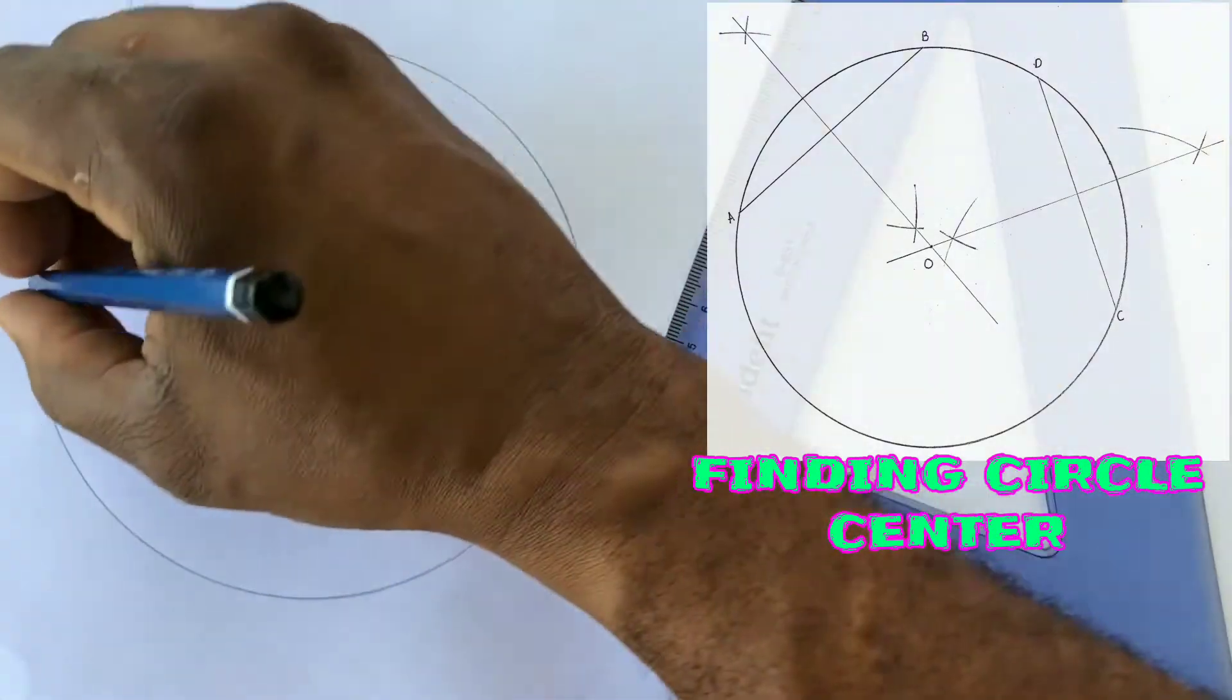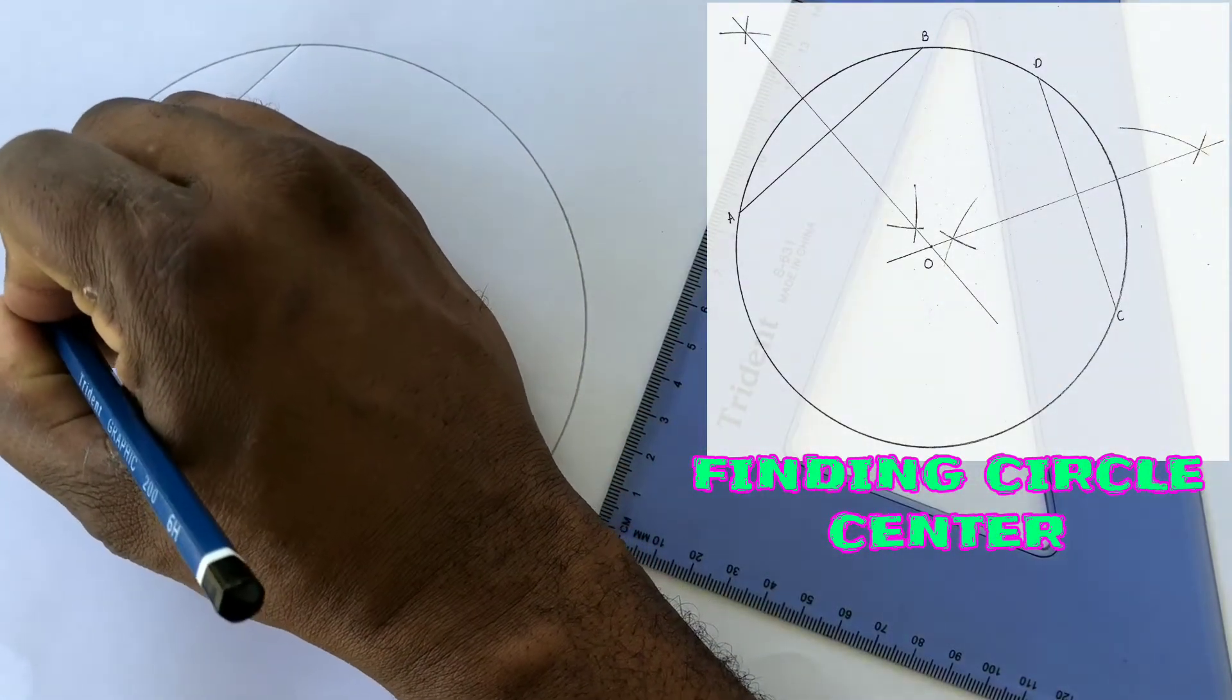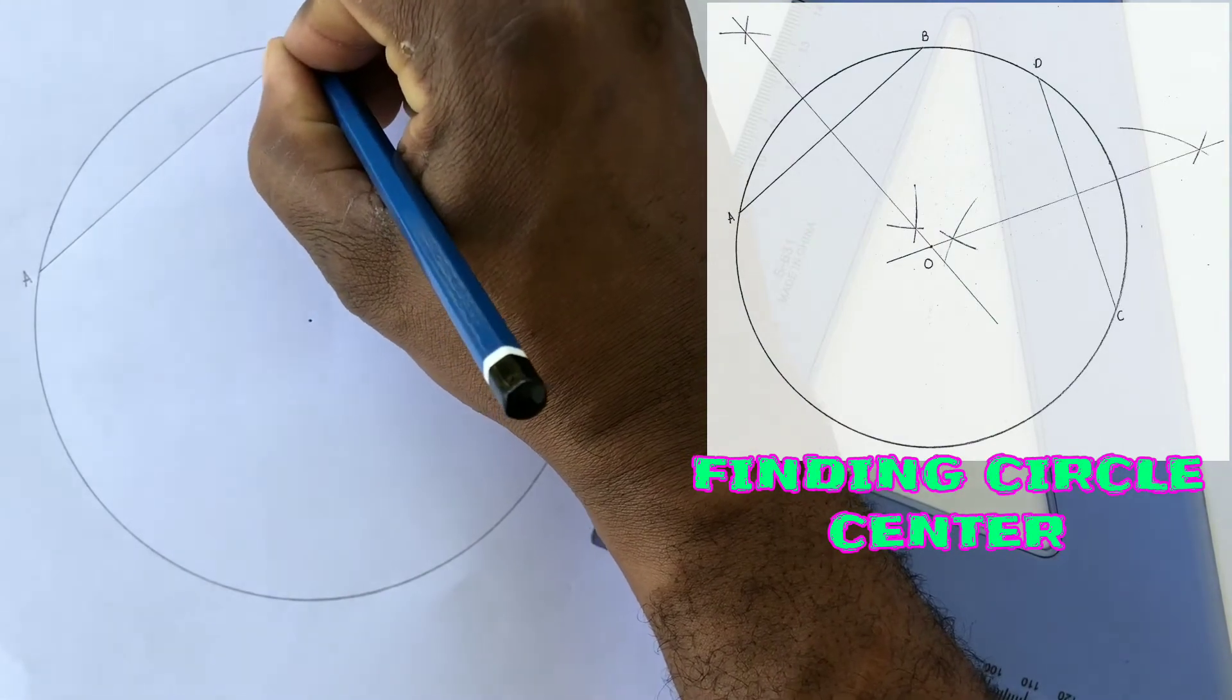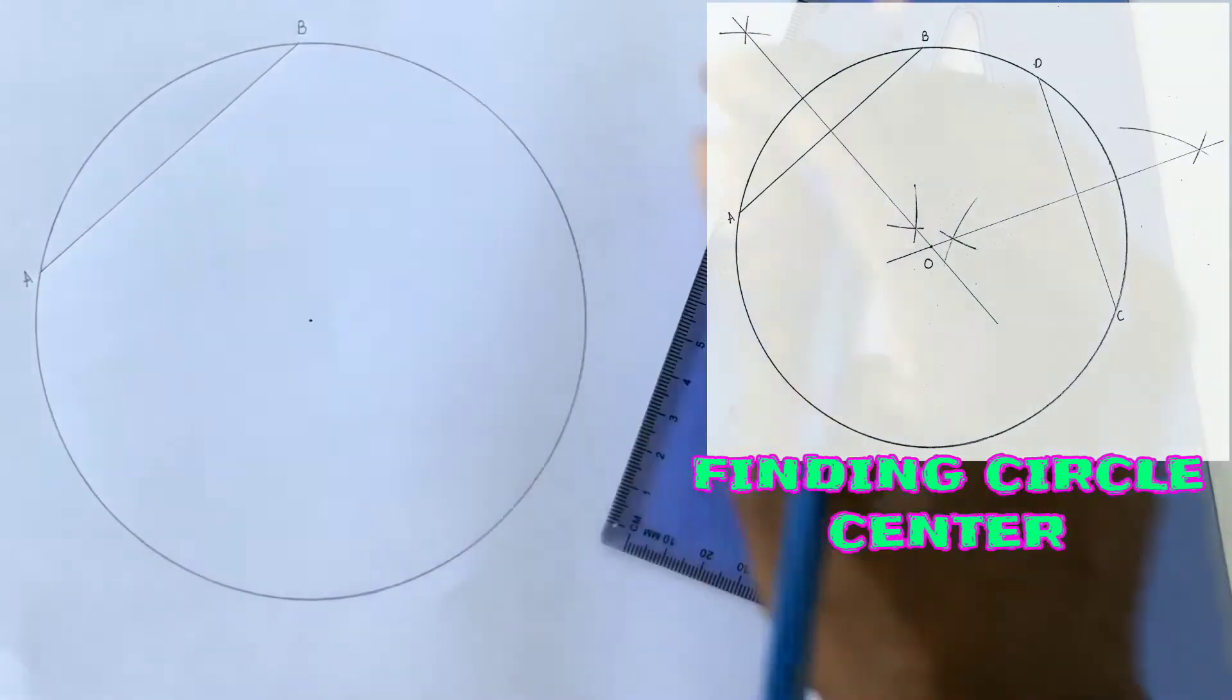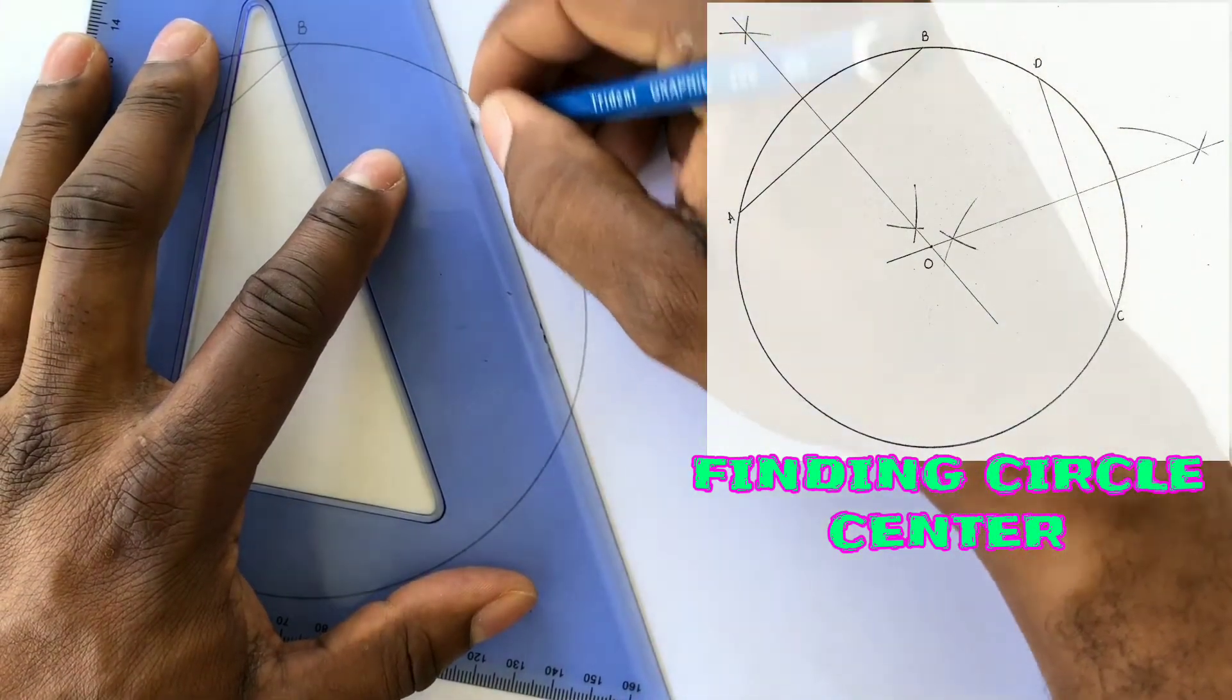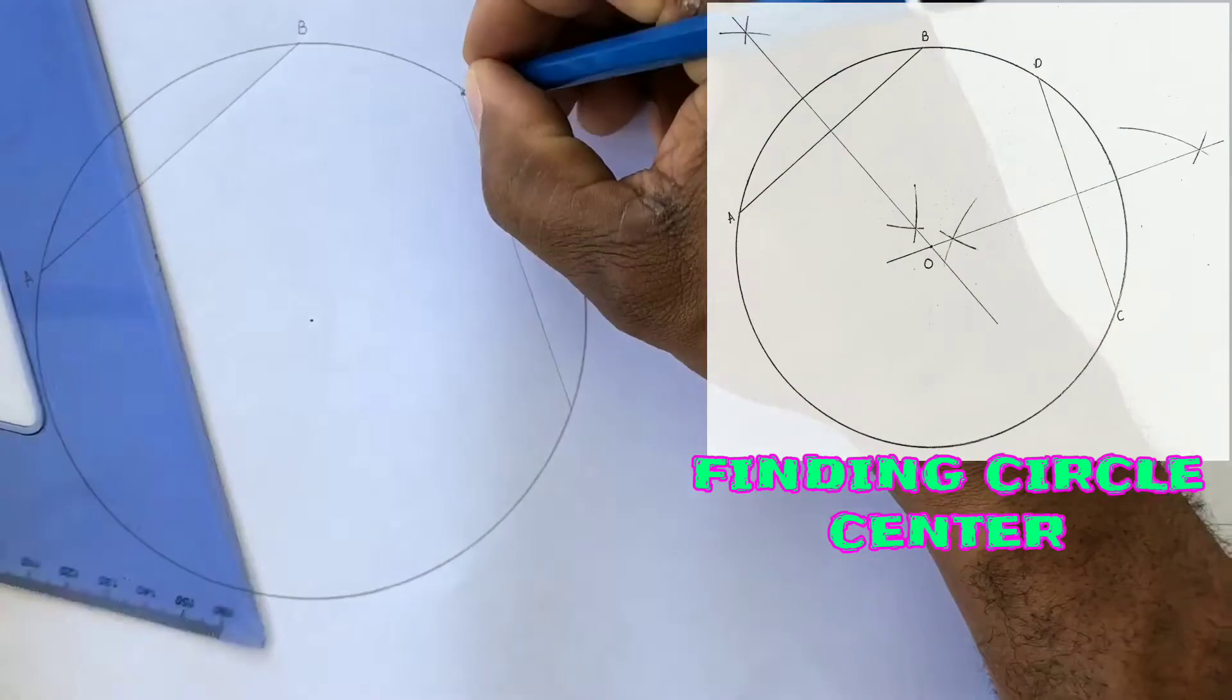Label your first chord A B. Now label your second chord C D.